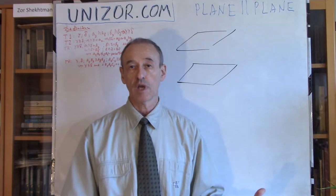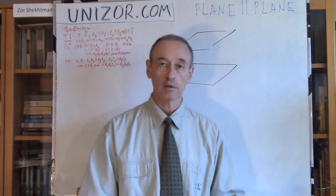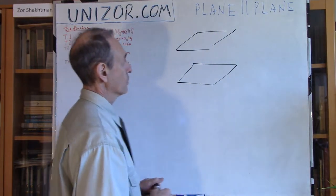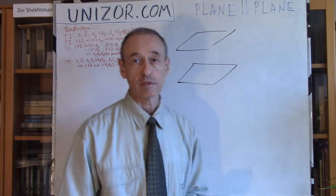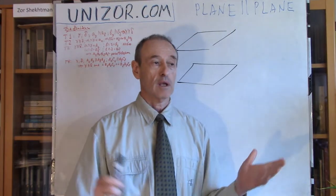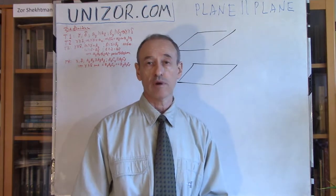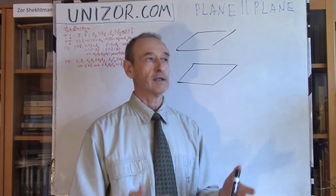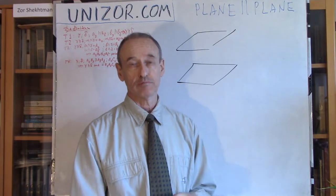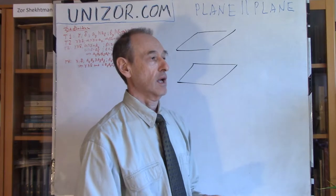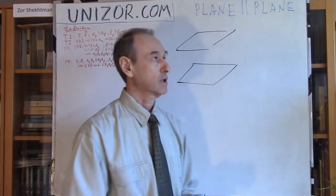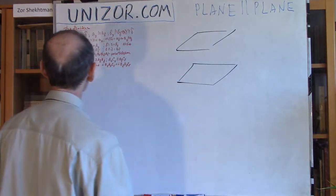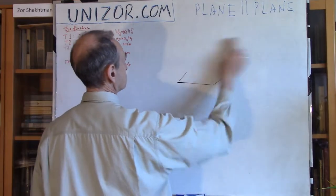So this is just a continuation — plane parallel to plane. Without further ado, I'll just go through these elementary theorems. The whole theory is really very simple. Parallel planes — we all kind of understand what this is in Euclidean geometry. Let's just go through these theorems one by one.